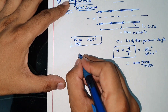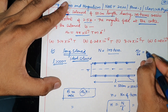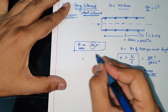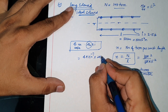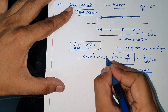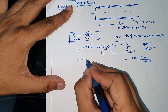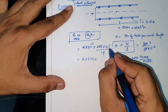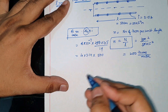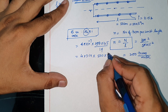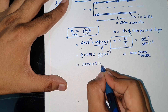Small n aa gaya 200. Ab yahan value put karte hain. Mu naught ki value — hum jaante hain mu naught upon 4pi ki value 10⁻⁷ hai — toh mu naught ki value hai 4π × 10⁻⁷. n ki value nikaal li 200, aur current rakha hai 2.5. Toh 4 × pi × 10⁻⁷ × 200 × 2.5 — 25 into 20 karo toh 500, aur multiply karenge toh 2000 × 3.14 hoga.